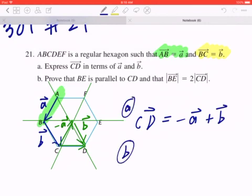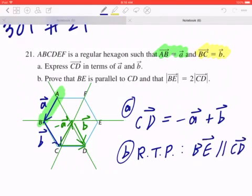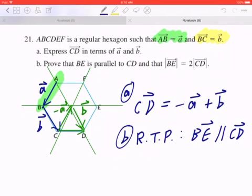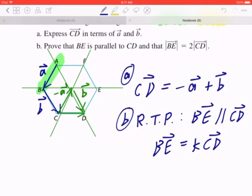Now in part B, they're asking you to prove that BE is parallel to CD, and that the magnitude of BE equals to two times the magnitude of CD. So you're required to prove that BE is parallel to CD. If these are parallel, what you're doing effectively is showing that BE equals to a scalar multiple of CD, or you can show that CD is a scalar multiple of BE.